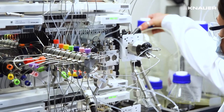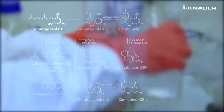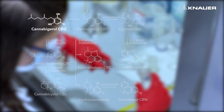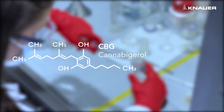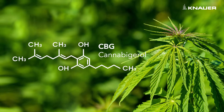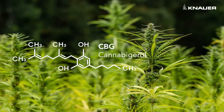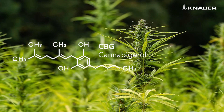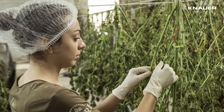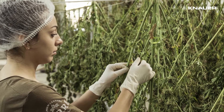CBG, or cannabigerol, is the decarboxylated form of cannabigerolic acid, CBGA, a phytocannabinoid directly produced by the plant. CBG is known as the chemical precursor to the most famous cannabinoids: THC, CBD, and CBL.